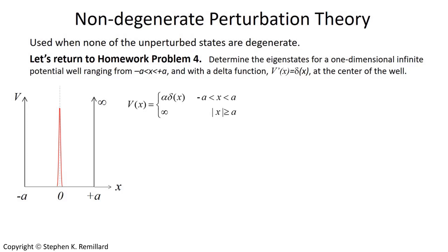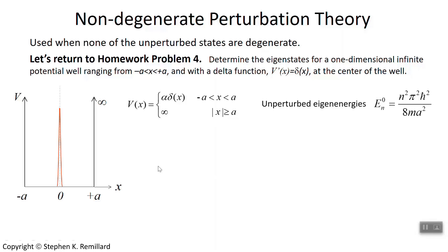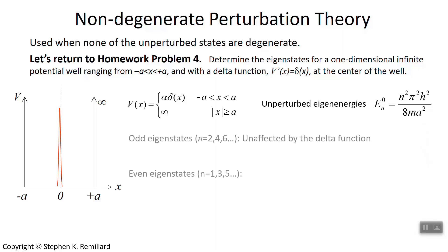So there's this disturbance right in the well, right at x equals 0. Your first challenge was to get the eigenstates for the well without that, and then see what happens when you introduce the delta function. With the delta function positioned right at x equals 0, you have a different way to express the potential energy — instead of saying potential energy is 0 between minus a and plus a, we say it's equal to the delta function between minus a and a, and outside that range it's infinity.